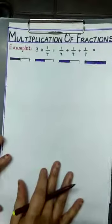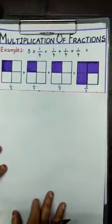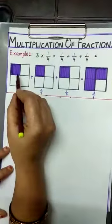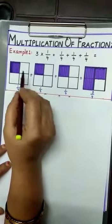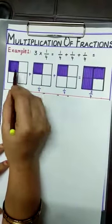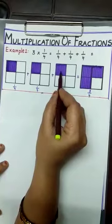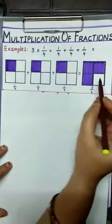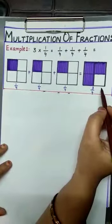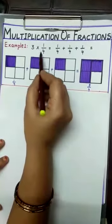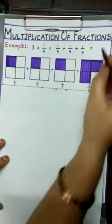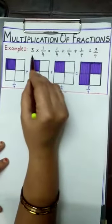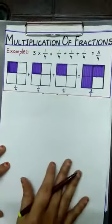Now let us represent this pictorially. Look at this figure — each shaded part is 1/4 of a square. This is 1/4, this is 1/4, and this is 1/4. The 3 shaded parts together represent 3/4. It means that 3 into 1/4 gives the value 3/4. This is the multiplication of a whole number by a proper fraction.